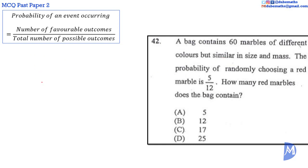So the information we have is that 5 over 12, the probability of drawing a red marble, is equal to the number of red marbles over total number of marbles, 60. So we have to solve for the number of red marbles.